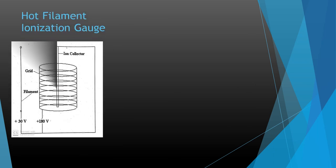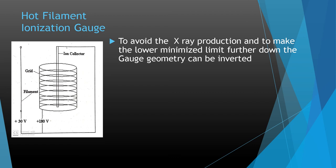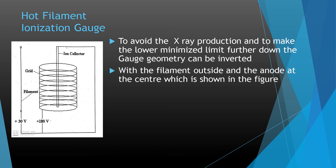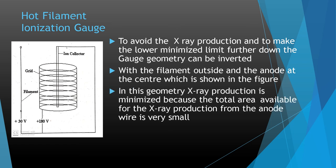To avoid X-ray production and to extend the lower pressure limit further, the gauge geometry can be inverted — the filament is placed outside and the anode at the center, which is the inverted arrangement used for the hot filament ionization gauge. In this geometry, the total area available for X-ray production from the anode wire is very small, and thus X-ray production is minimized.